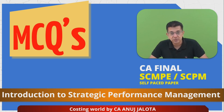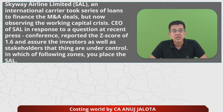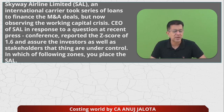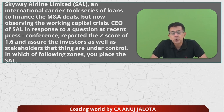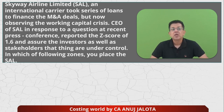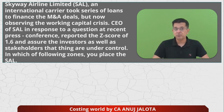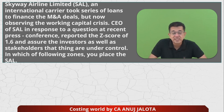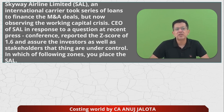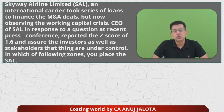Let's start. The question for today is: SAL — Skyway Airline Limited — a non-manufacturing company, an international carrier that took a series of loans to finance mergers and acquisitions deals, but is now observing a working capital crisis. The CEO, in response to a question at a recent press conference, reported a Z score of 1.6 and assured investors and stakeholders that things are under control. In which of the following zones would you place SAL?